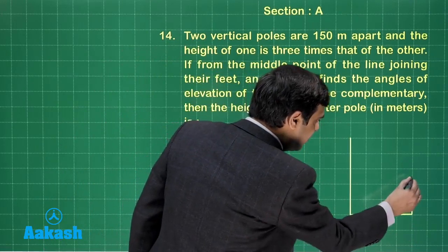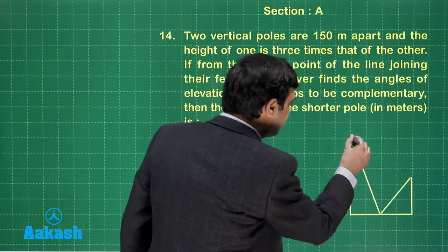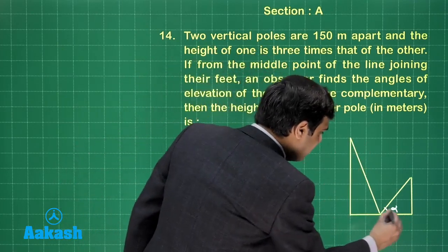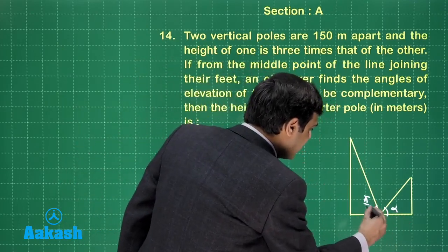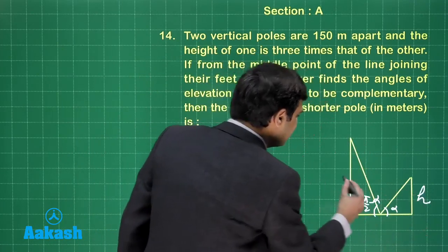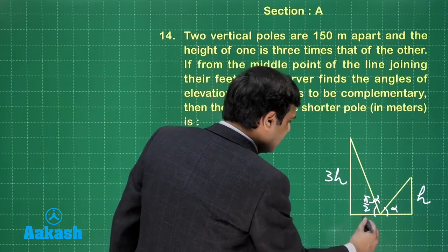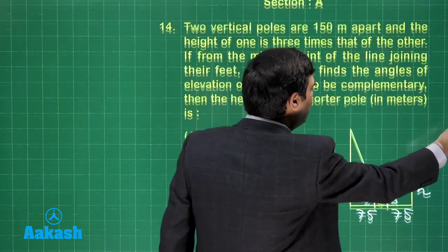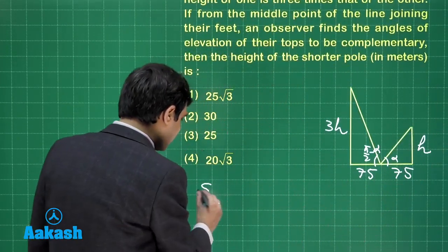This angle and another one. So if I consider this one as alpha, this is pi by 2 minus alpha. This height is h, this is 3h, this is 75, this is also 75. So simple, now we have to calculate.